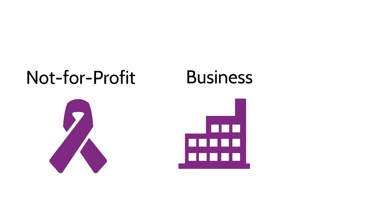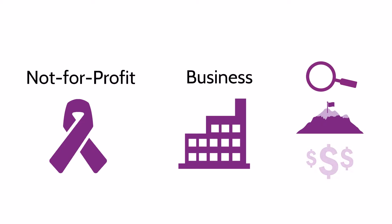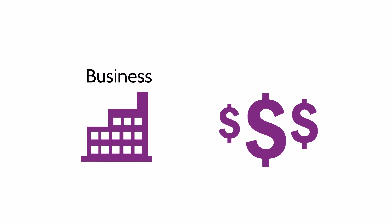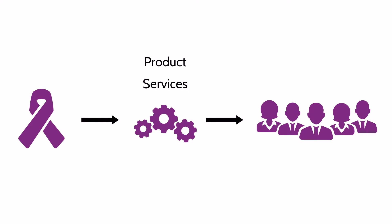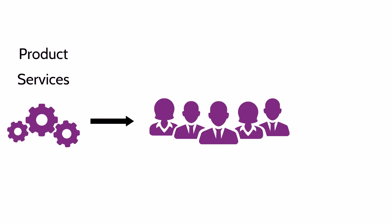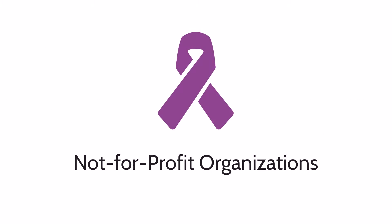A not-for-profit organization and a business differ based on the focus and purpose of their activities as well as how excess revenues are distributed. The primary goal of a business is to make a profit, and they have owners in the form of shareholders who share in the profits through dividends. The primary goal of a not-for-profit organization is to provide products and services to its stakeholders and to advance goals based on shared interests. NFPs are not privately owned, and any surplus revenue must be retained or reinvested in the organization to maintain or expand its products and services.